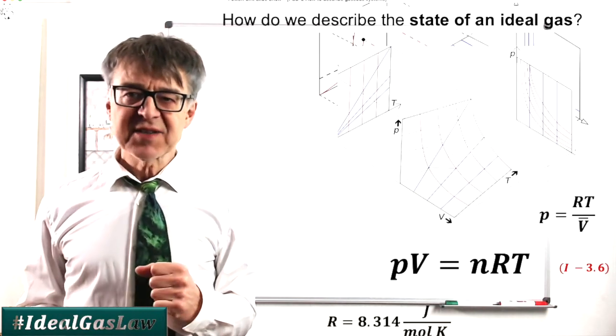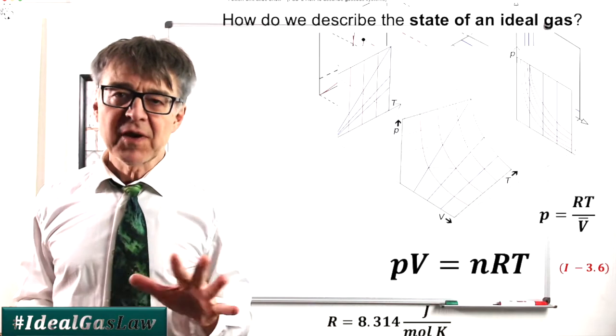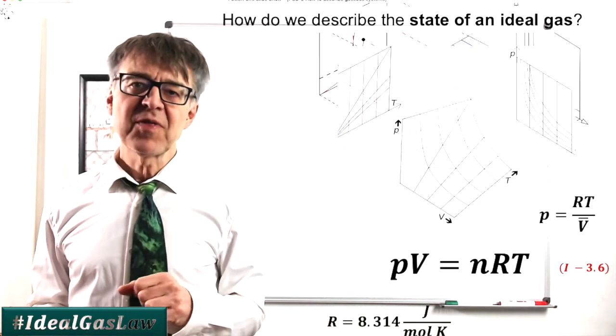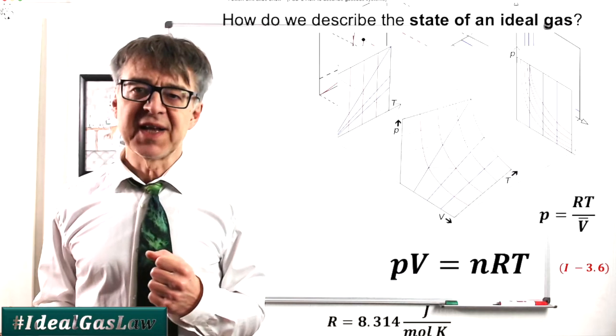R, the ideal gas constant, is the same for all gases. 8.314 joules per mole and Kelvin.